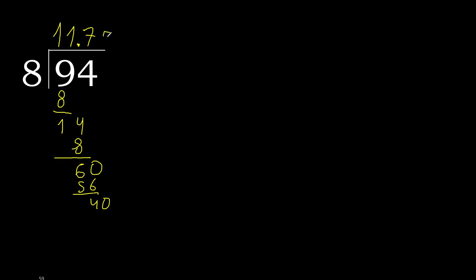Forty. Eight multiplied by five is forty. Subtract. Zero. Therefore finish. Ninety divided by eight is the result here.